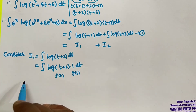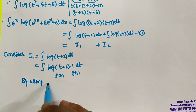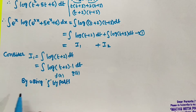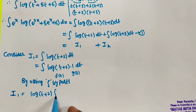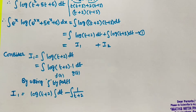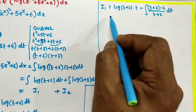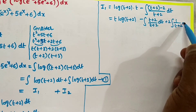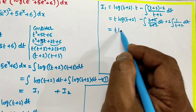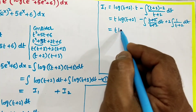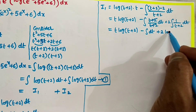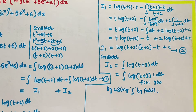Consider I₁ = ∫log(t+2) dt. We know how to integrate log x, and when only a log function is present, we use integration by parts. Write it as ∫log(t+2)·1 dt, where log(t+2) is f(t) and 1 is g(t), applying the ILATE rule.